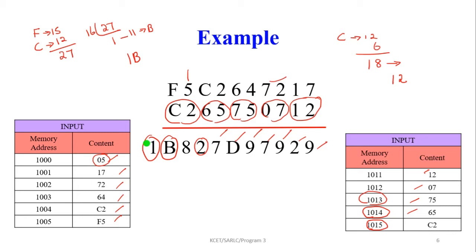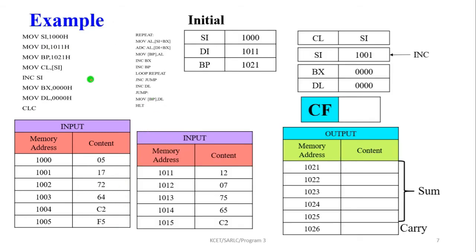Now we explain the program iteration by iteration. SI is 1000 (thousand), DI value is 1011, and base pointer value is 1021. First, move CL from [SI]: the memory location 1000 contains 05, so this is moved into CL. CL register now contains 05. Then BX becomes 00 and DL becomes 00. Increment SI: initially 1000, now updated to 1001.